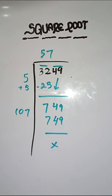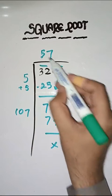So this is completely solved. So square root of 3249 is 57.